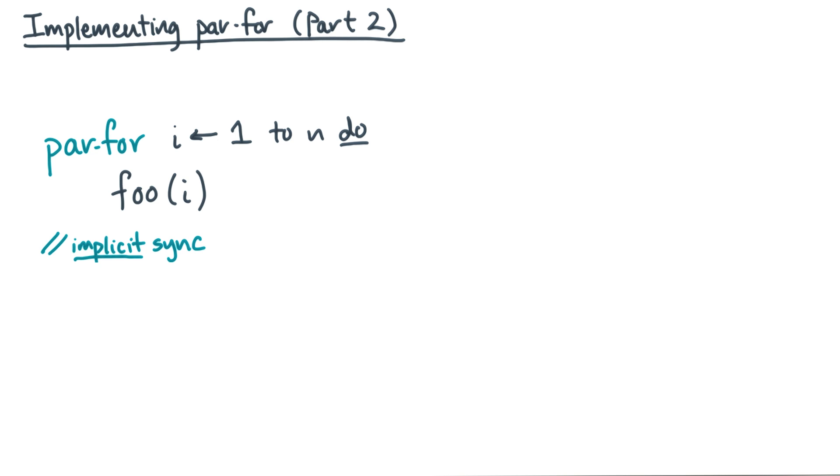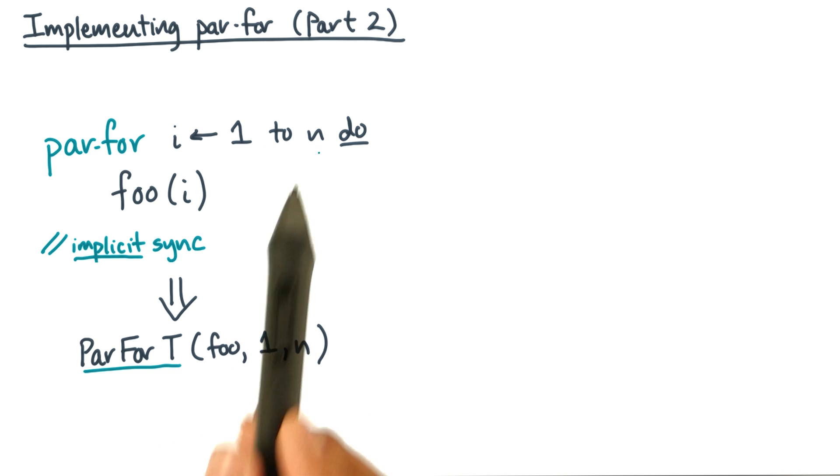Now suppose you implement par4 in this way. Let's replace par4 with a procedure call. This procedure call takes the function or the loop body as well as an iteration range, in this case 1 to n.